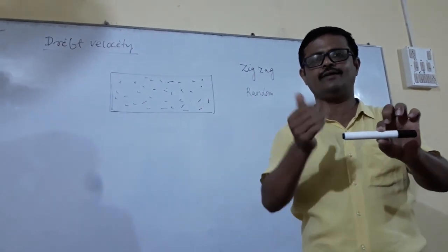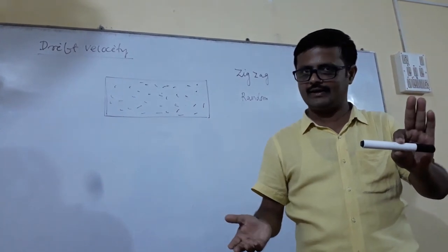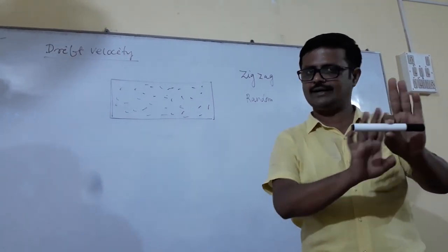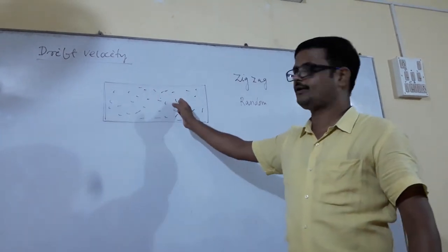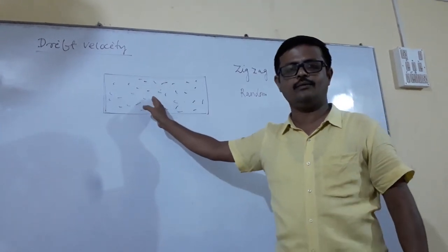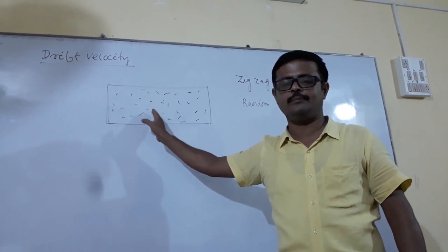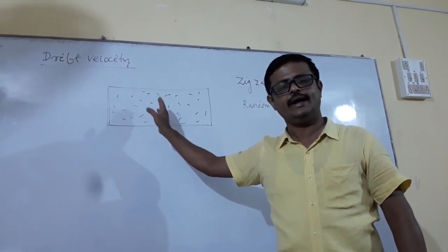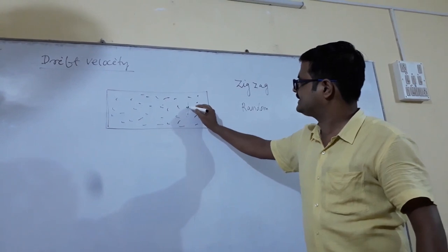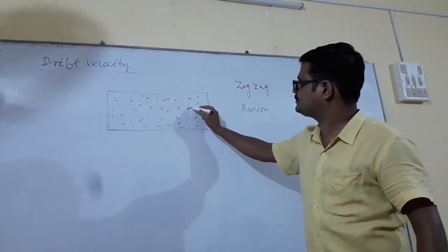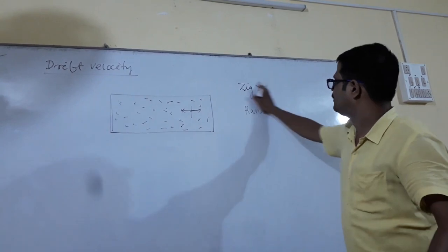So their average velocity is zero. When the average velocity is zero, there is no current. The potential difference is zero, all the electrons are moving randomly, and that is why the average velocity is zero. There is no current passing through any cross-section of the conductor.